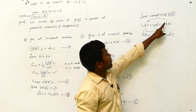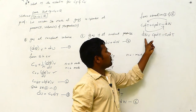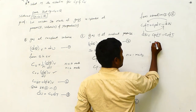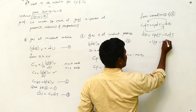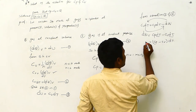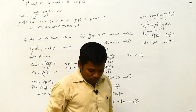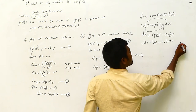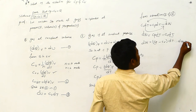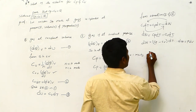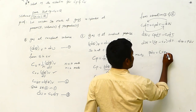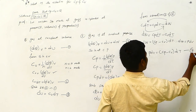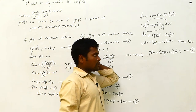We know that dW equals P·dV, so P·dV equals (Cp minus Cv)·dT. This is equation number seven. Now we need to eliminate P·dV and dT. From the ideal gas equation for one mole: PV equals RT, so differentiating: P·dV equals R·dT.